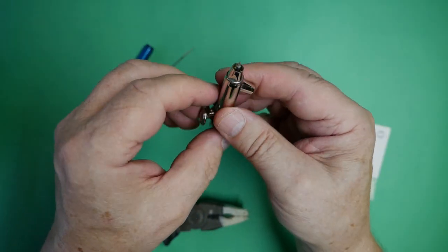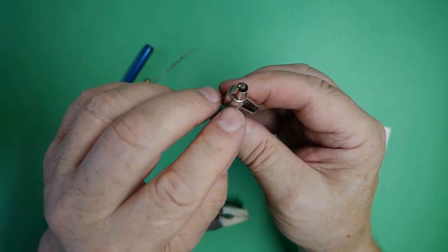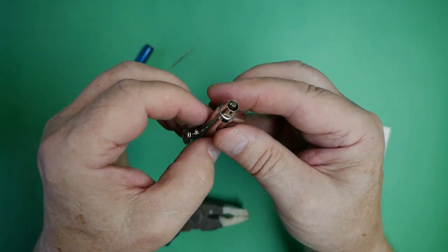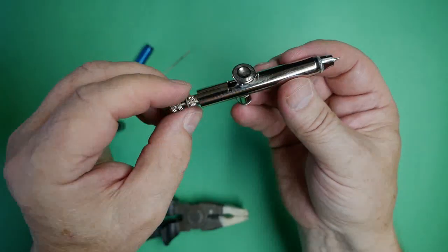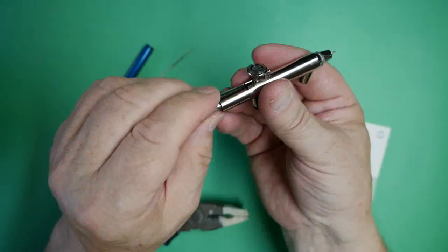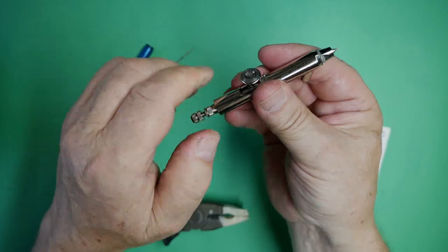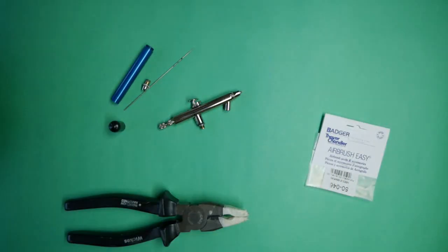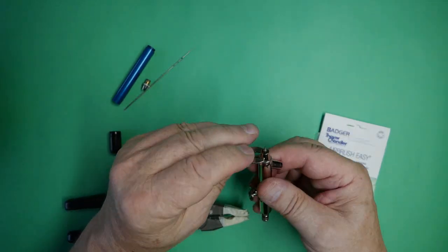So I think the first thing I would do is strip, take the head off, put it in to soak, have a look down the airbrush once I've got the head off to see. Take the head off.